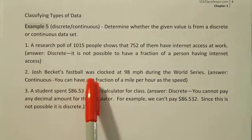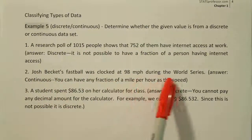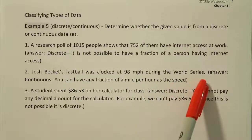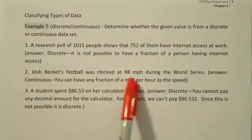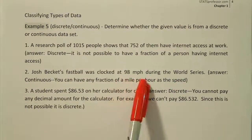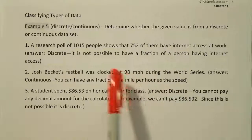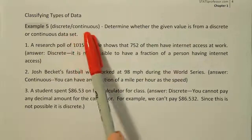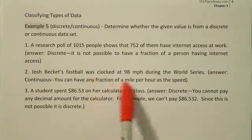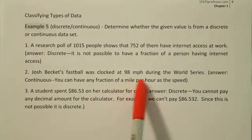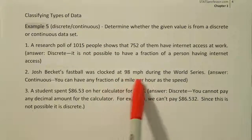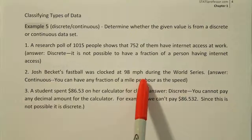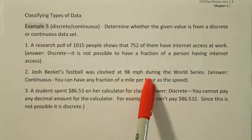Now let's look at the next one: Josh Beckett's fastball was clocked at 98 miles per hour during the World Series. When you think about this speed, the first thing to ask again is: did you count up the miles per hour or did you measure it? If you measured it, it's probably continuous. They get the miles per hour by using a radar gun — a measuring device — to measure the speed of the baseball. So I would say that's most likely continuous.